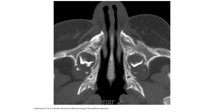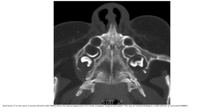Axial bone CT in a three-month-old shows mild narrowing of the pyriform aperture. Axial bone CT in the same three-month-old with mild congenital nasal pyriform aperture stenosis shows the typical appearance of a small triangular-shaped hard palate. This was an isolated finding without an associated solitary median maxillary central incisor.